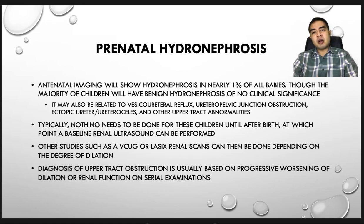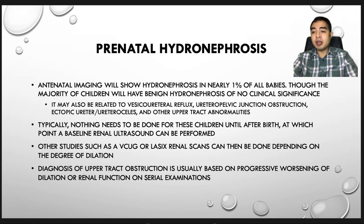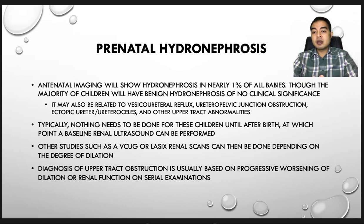The next commonly encountered pediatric urology case is prenatal hydronephrosis. Antenatal imaging shows hydronephrosis in nearly 1% of all babies. Though the majority would have benign hydronephrosis of no clinical significance, it may also be related to vesicoureteral reflux, UPJO, ureteropelvic junction obstruction, ectopic ureters, ureterocele, and other upper tract abnormalities as described earlier.